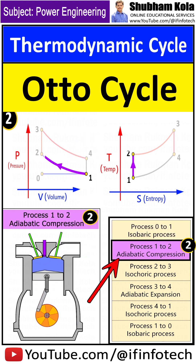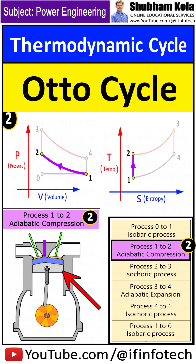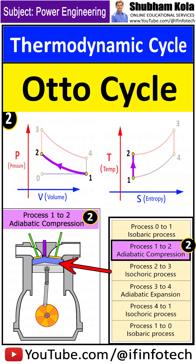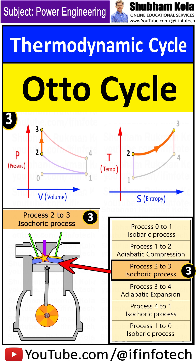Process 1 to 2 is an adiabatic compression process where the piston moves up to compress the air-fuel mixture. The compression causes the mixture to increase in pressure and temperature. However, there is no heat exchange, and the cycle reaches point 2 — that is when the fuel is met by the spark plug to be ignited.